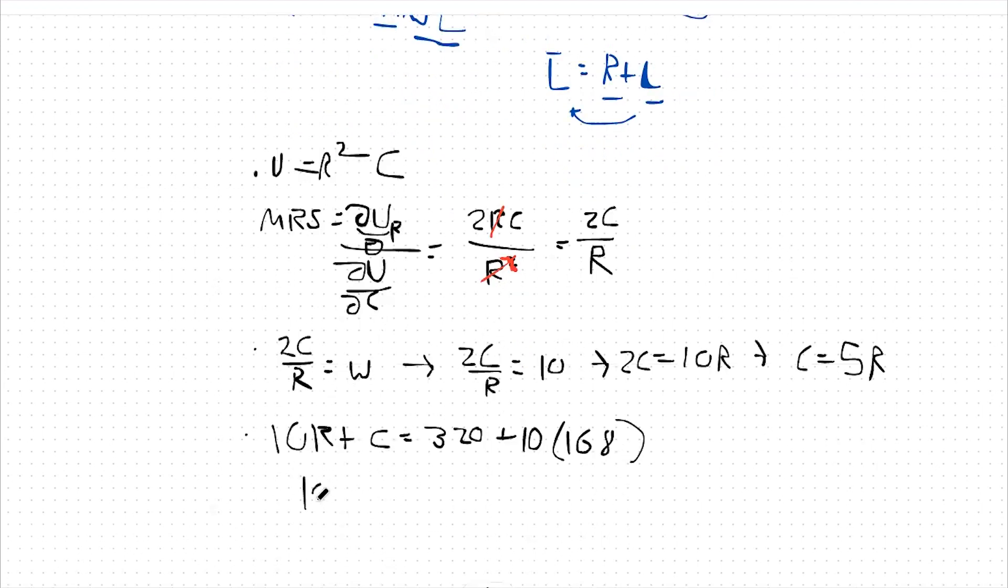Then we're going to say 10R plus 5R equals 320 plus 1680 which should be 2000. So 15R equals 2000 or R equals 133.3 repeating.